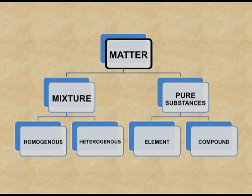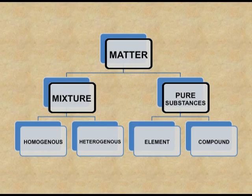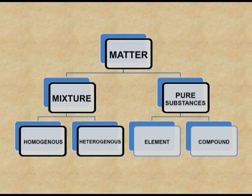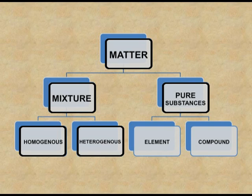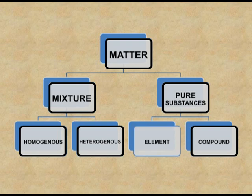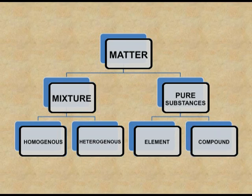Matter is classified into mixtures and pure substances. Mixtures are further classified into homogeneous and heterogeneous mixtures. In both types, components can be mixed in any ratio, but in a homogeneous mixture the composition is uniform and you cannot see the separate components. In a heterogeneous mixture, you can see the separate components — the composition is not uniform throughout. Pure substances are further classified into elements and compounds. Elements can be monoatomic or polyatomic but are made up of the same type of atoms. A compound is a pure substance made up of two or more elements combined in a fixed ratio.